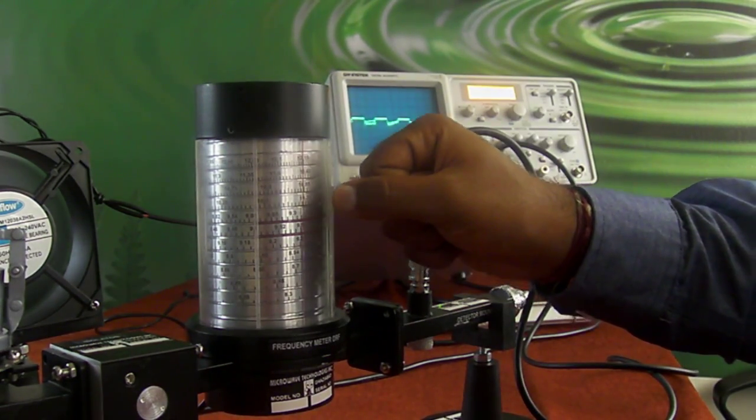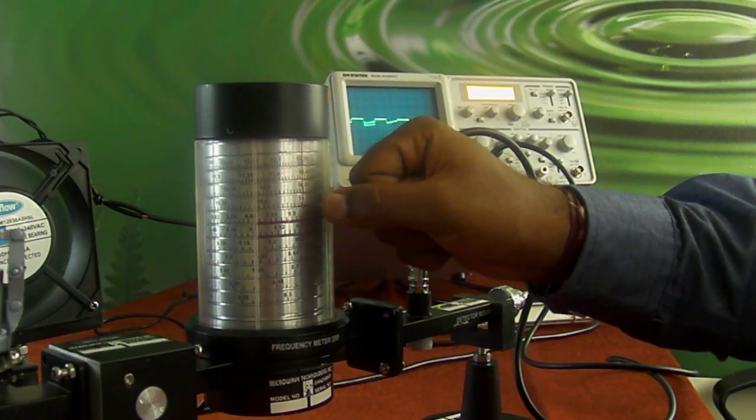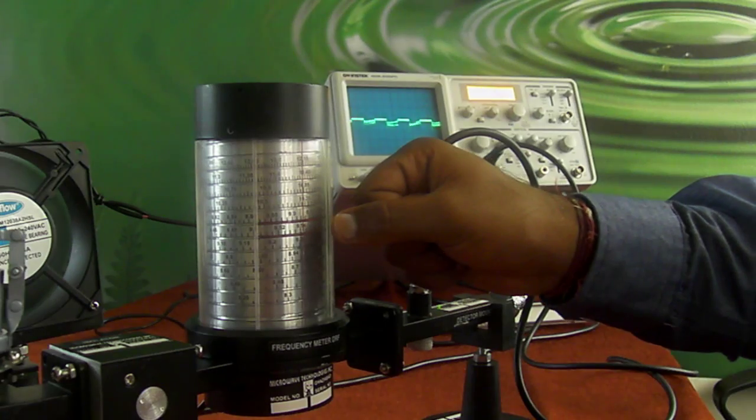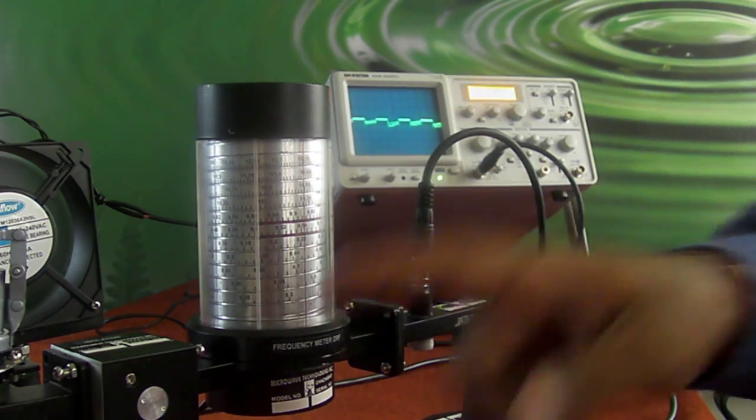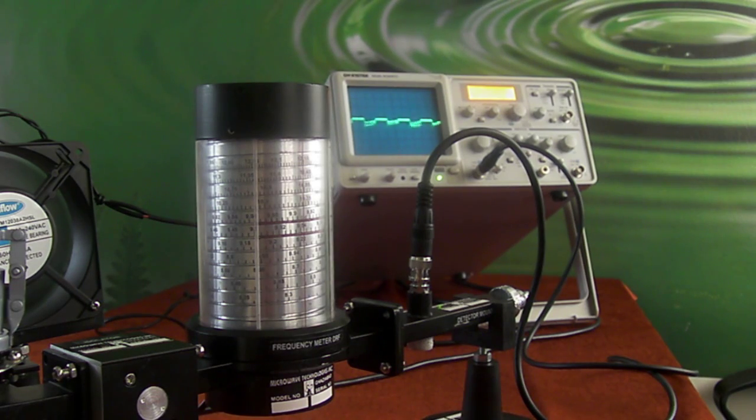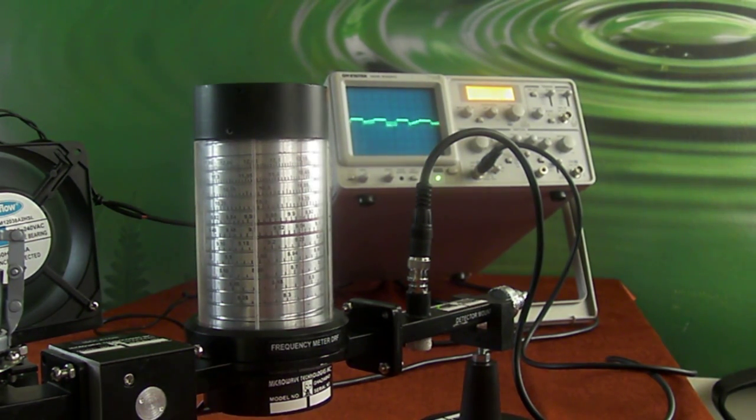The reading is 9.54, so 9.54 gigahertz is the frequency we are getting. This was the demonstration for the use of a frequency meter.